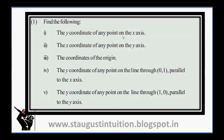Find the following: the y-coordinates of any point on the x-axis; the x-coordinates of any point on the y-axis; the coordinates of the origin; the y-coordinates of any point on the line through (0,1) parallel to the x-axis; the y-coordinates of any point on the line through (1,0) parallel to the y-axis.